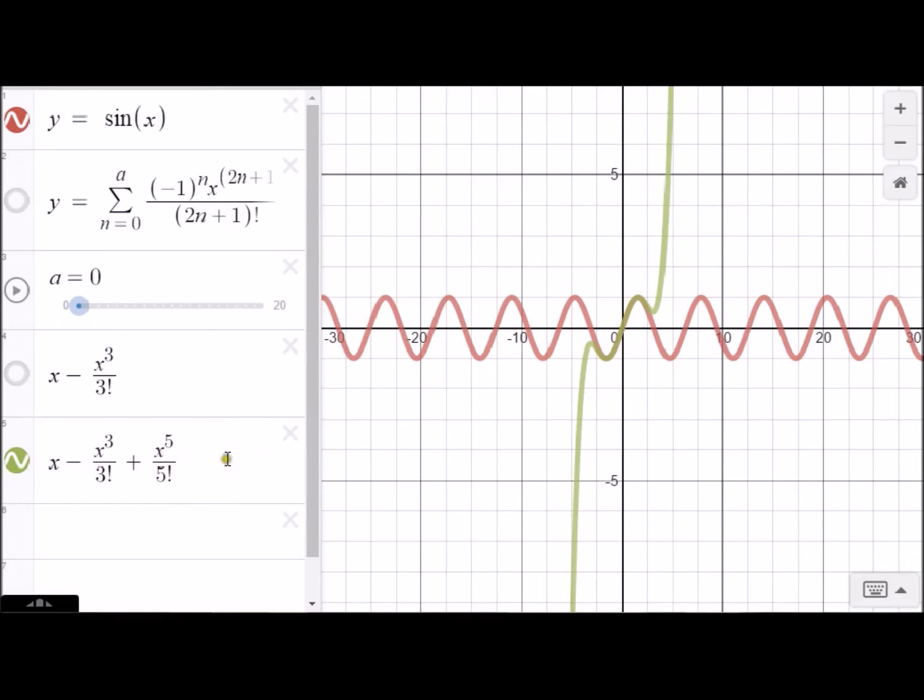Let's look at what happens as we just add more and more and more terms. So here I'm going to let a get really big. It's going to go up to 20. So eventually we're going to have a pretty big polynomial. So let's just watch what happens.